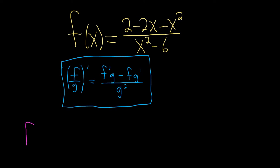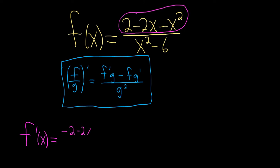So f prime of x is equal to — let's find the derivative of the top piece, circled here in purple. The derivative of 2 is 0, the derivative of negative 2x is just negative 2, and the derivative of negative x squared is negative 2x. So that is the derivative of the top. Note that the f in the formula and the f in this problem use the same symbol — that's why I prefer saying 'top' and 'bottom' instead of f and g.